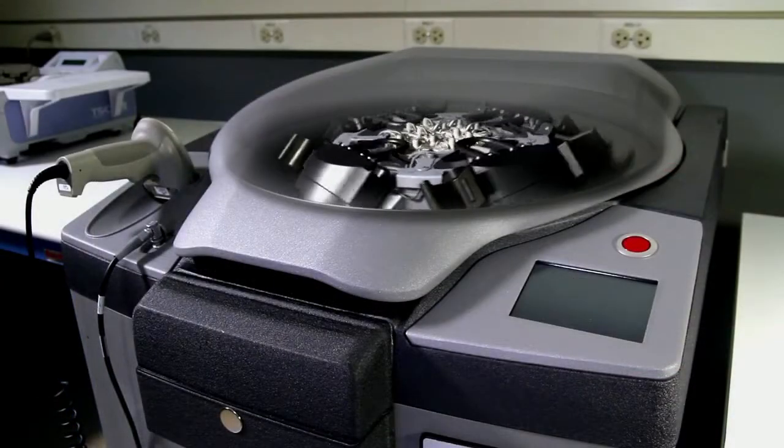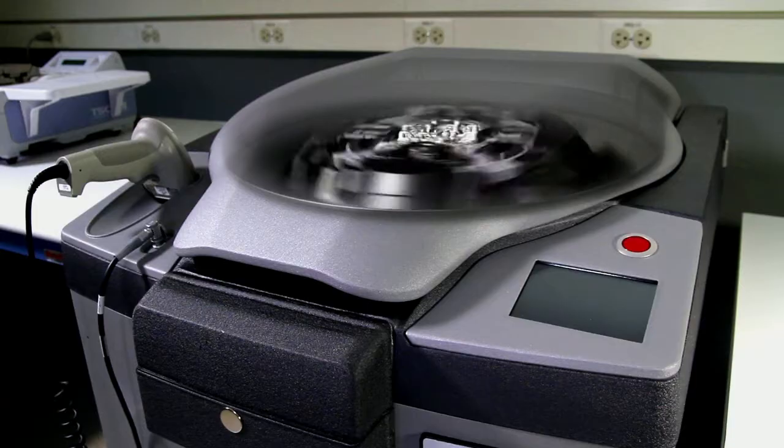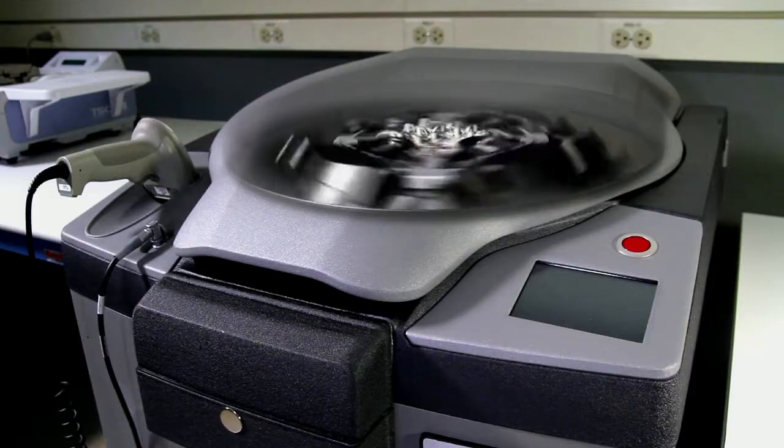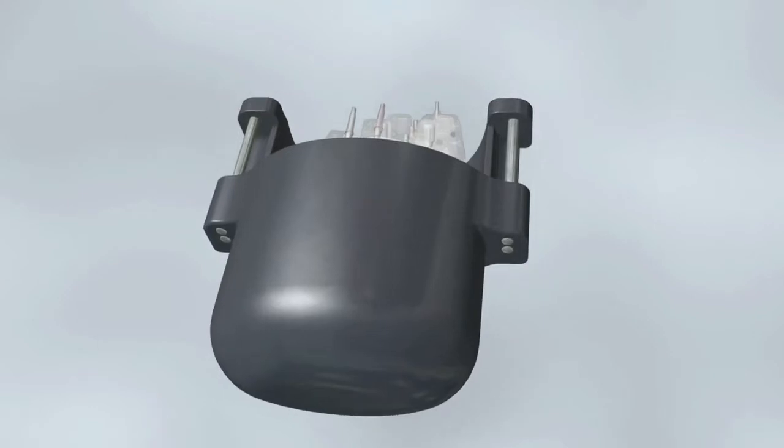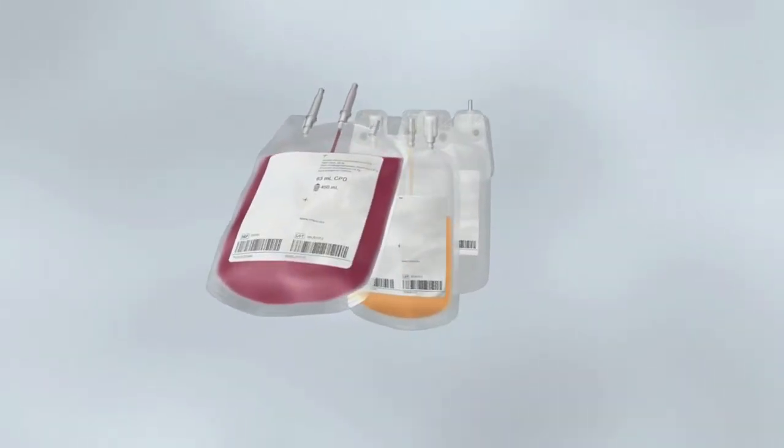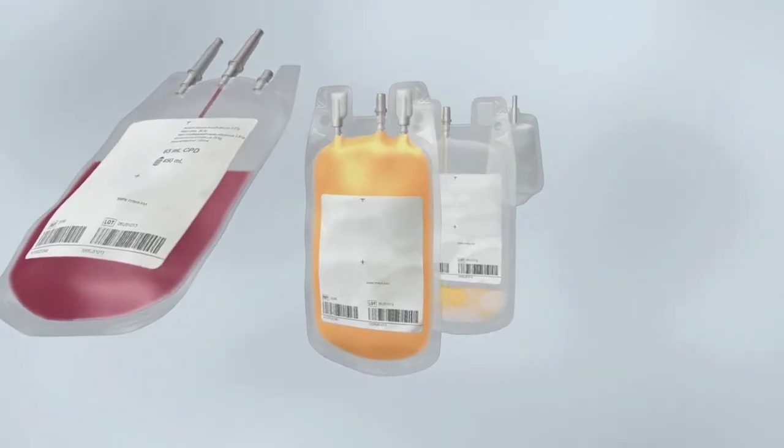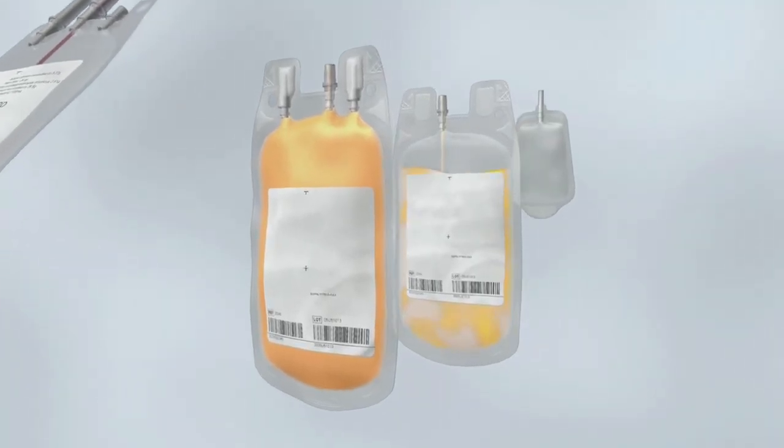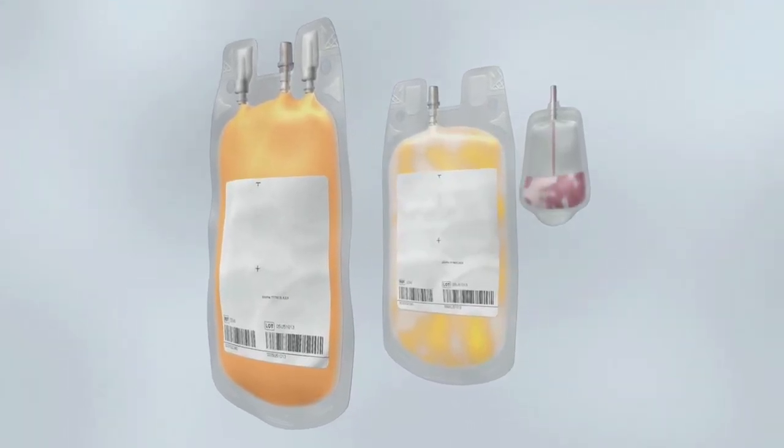Inside the device, the rotor spins to separate whole blood into its components. An expression system with various procedure parameters enables the device to meet customer-specific needs. Optical sensors within the buckets and processing lines carefully monitor the component interface. The hydraulic system fills the bladders in each bucket so expression can begin. Plasma, platelets and residual leukocytes are expressed into their respective bags.